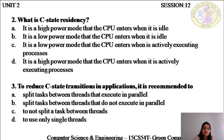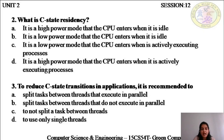What is C state residency? The processor works in two states: C state and P state. C state is a low power mode that the CPU enters when it is idle, when it is not executing any active process. So the answer to this question is B. It is definitely not a high power mode — it is a low power mode, and in this mode the CPU is not actively executing any process.